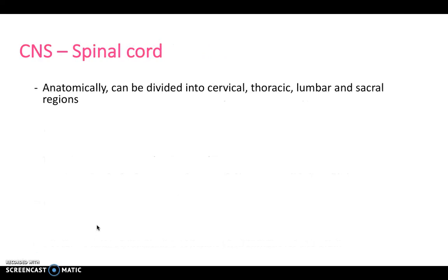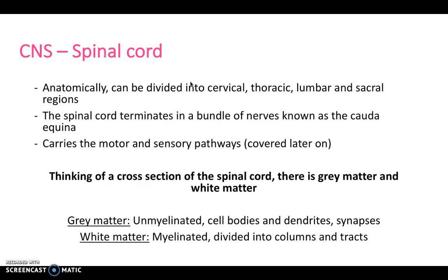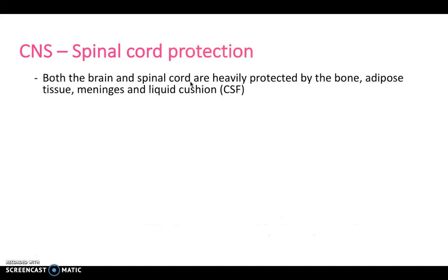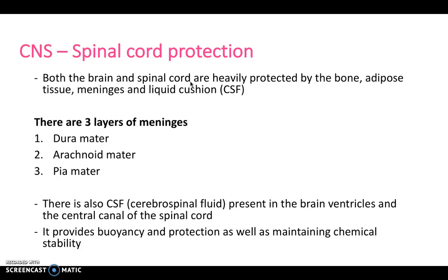The spinal cord can be divided into the cervical, thoracic, lumbar, and sacral regions. It terminates around L2 into a bundle of nerves known as the cauda equina. It carries motor and sensory pathways. The gray matter are unmyelinated cell bodies and dendrites, and the white matter are myelinated axons divided into columns and tracts. The spinal cord is protected by meninges, the dura mater, arachnoid mater, and pia mater. Within those, you've got the CSF present in the brain ventricles and central canal, allowing buoyancy, protection, and maintaining chemical stability.